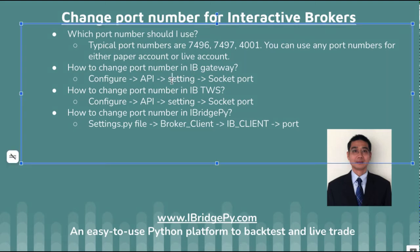Now let's talk about how to change the port number in IB Gateway. You can go to Config, then API, then Settings, then Socket Port. We will do a demo later.